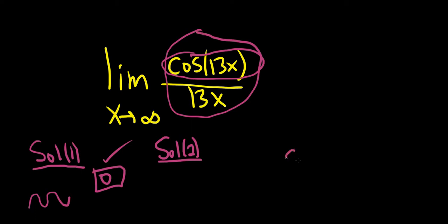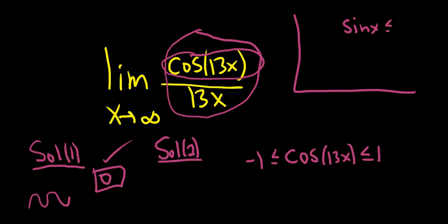So you start by realizing that the cosine of 13x is always between 1 and negative 1. That's always true for sine and cosine. So if you have sine of x, that's always between 1 and negative 1. Likewise, cosine of x is always between 1 and negative 1. These things are always true and are super useful in general in mathematics.